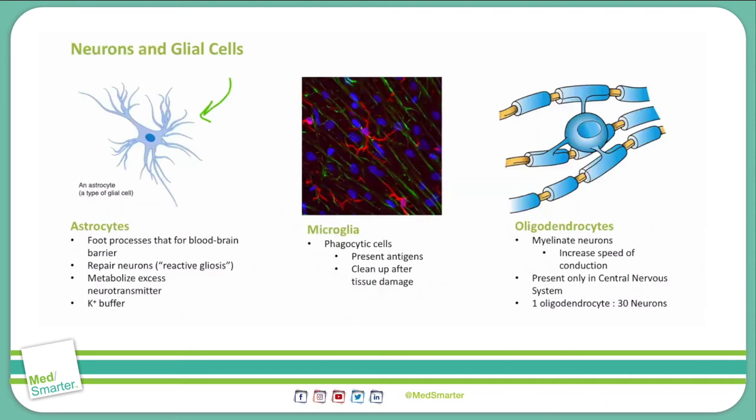Myelin is a protein that surrounds axons and serves to speed up the transduction of action potentials between neurons. Myelin is essential for normal function of neurons. In fact, in demyelinating diseases, like multiple sclerosis, the loss of myelin can cause neurologic symptoms like weakness and vision loss.